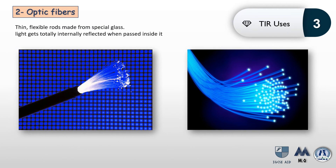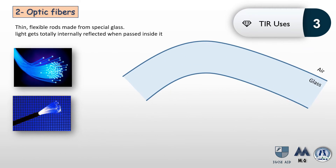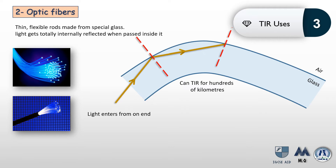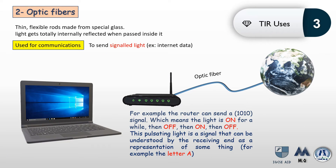Another important application of TIR is optic fibers — thin, flexible rods made from special glass. As light enters one end, it hits the glass-air boundary at an angle greater than the critical angle, causing total internal reflection. This process repeats at every boundary, allowing light to travel through the fiber for hundreds of kilometers until it exits the other end.